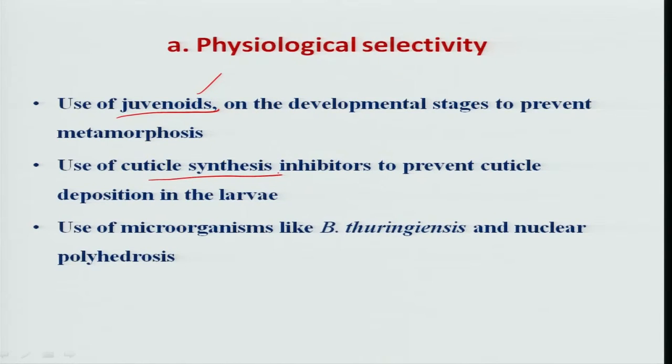Another hormone required for insect growth and development is the molting hormone, or ecdysone, which is very much required for the molting process. If any substance interferes with the synthesis of the molting hormone, it again disrupts larval development. Commercially, chitin synthesis inhibitors are available in the market, and when used as insecticides, the molting is affected, resulting in death of the insect.